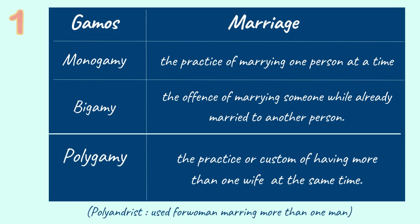The first root word is Gamos, meaning marriage. There are 3 words related to Gamos: Monogamy — the practice of marrying one person at a time; Bigamy — the offense of marrying someone while already married to another person; Polygamy — the practice or custom of having more than one wife at the same time. Please note that polyandry is used for women in the case she marries more than one man.